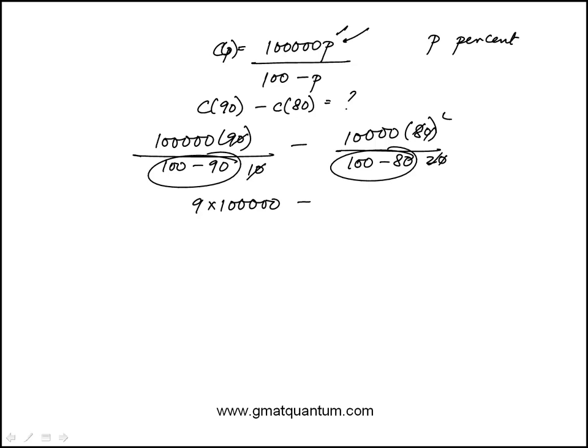So that becomes, actually this is 100,000, 4 times 100,000. And that difference 9 minus 4 is 5.